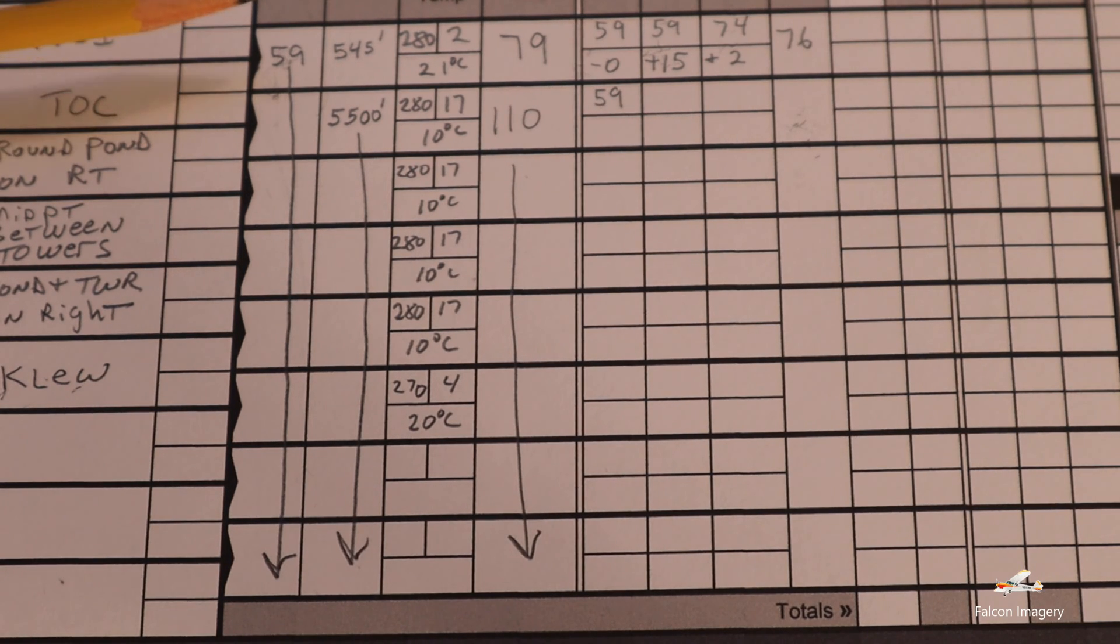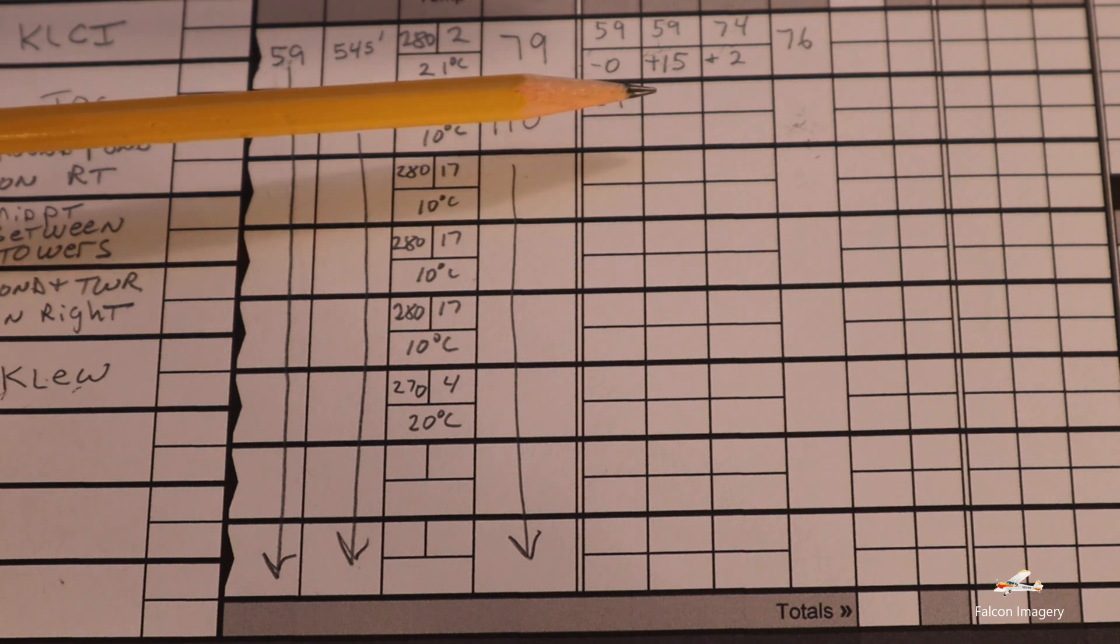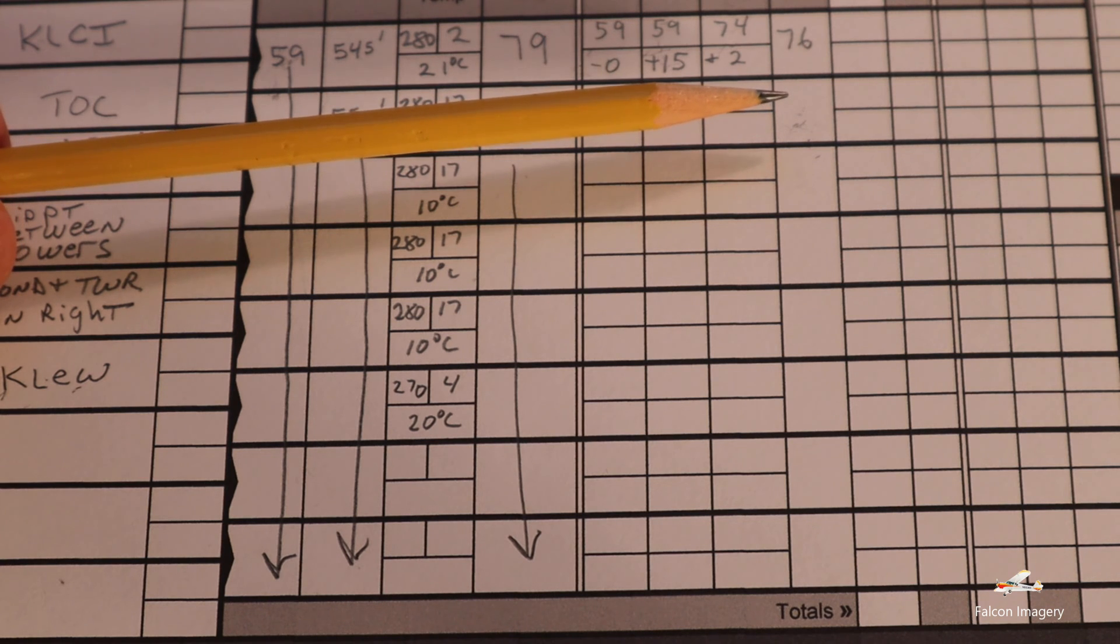So I've already determined what my course heading has to be when departing Laconia Airport. Now the next step is determining the course heading at altitude, cruise altitude, 5,500 feet in this case. The winds at that altitude are forecast to be 280 at 17 knots with the temperature 10 degrees C. And so what our goal here is now to determine what the course heading needs to be when flying at 5,500 feet on our cruise altitude.